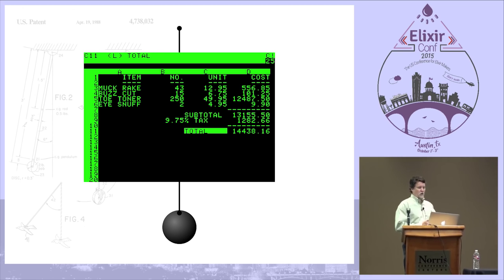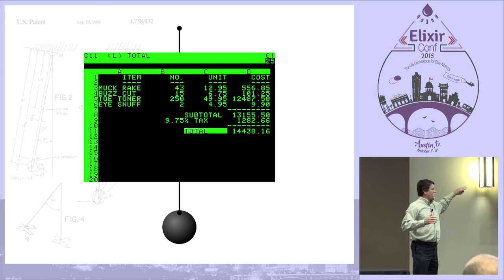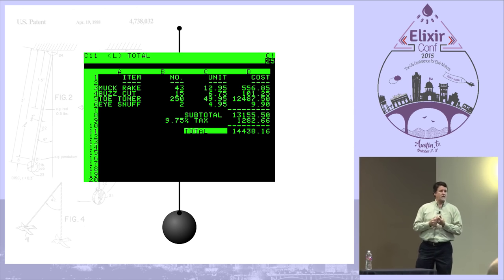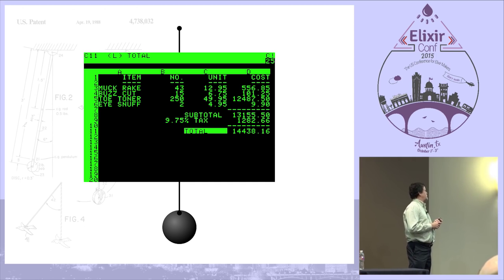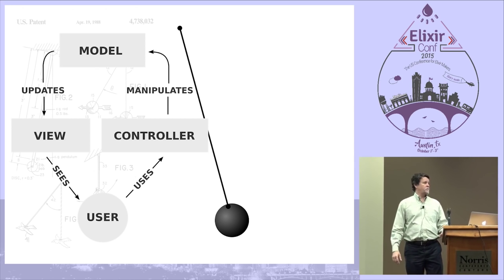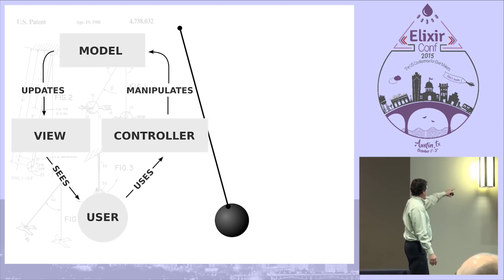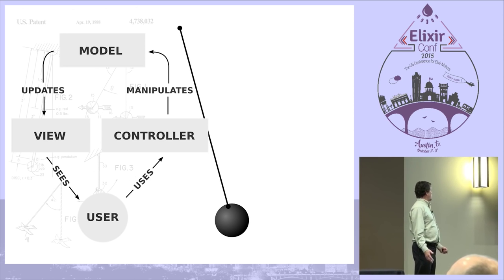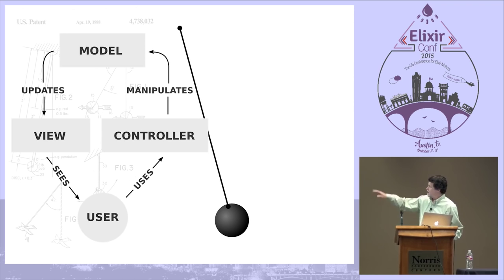There was a cool application on the Apple computer around the same time that started to change how we thought about user interfaces — really the first business application for a personal computer: VisiCalc. VisiCalc is really a functional program in a functional programming language. What was cool was that since it was running locally, the request-response feedback loop was immediate. You'd change a number and the whole sheet would recalculate at once. Around the same time, in the early 80s, we started to see work come out of a group at Xerox PARC.